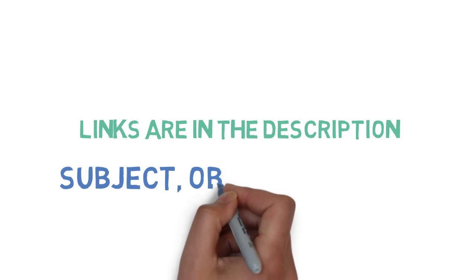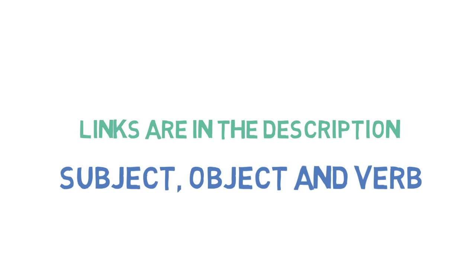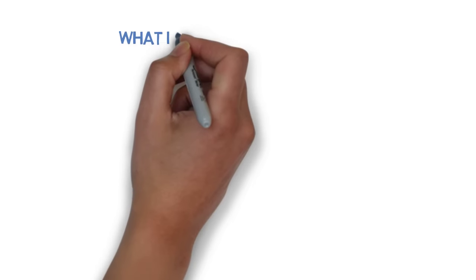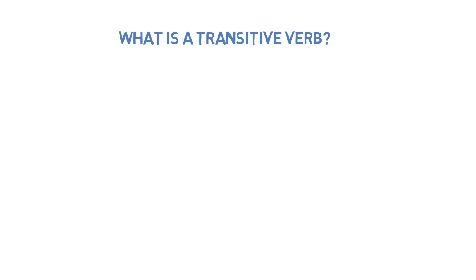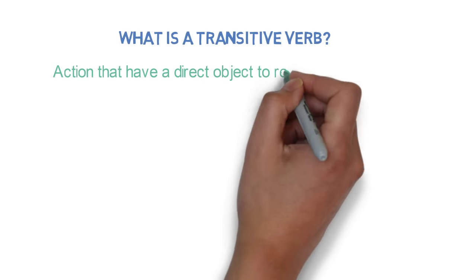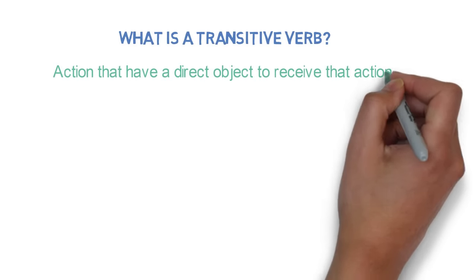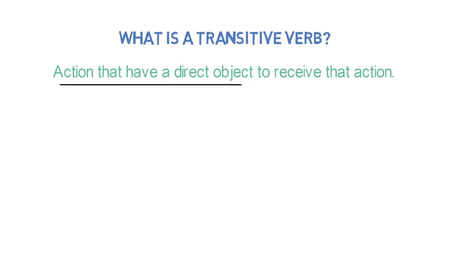Now that you are clear with what is subject, object, and verb, let's look into the main topic of today, which is transitive and intransitive verbs. So what is a transitive verb? A transitive verb is an action that has a direct object to receive that action — so it's an action verb with a direct object.